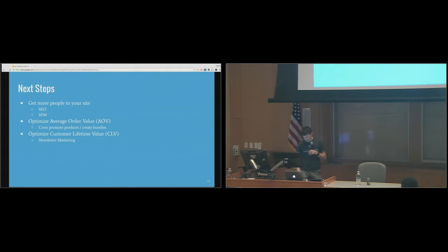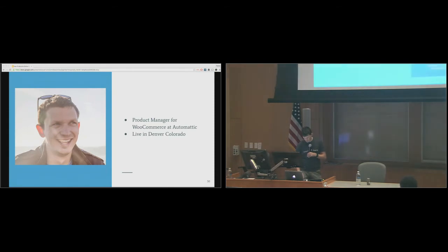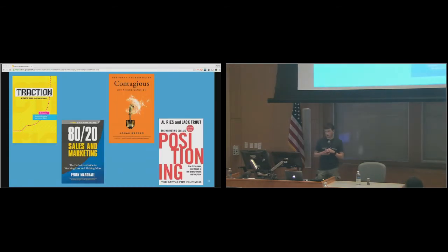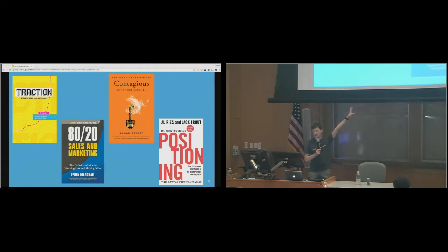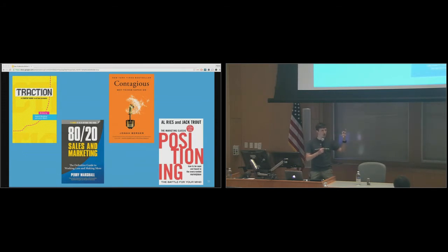I have a lot more resources. 'Traction' is a fantastic book — there are like 19 different traction channels, and it's really good even though it's for startups because almost all of them also work for e-commerce stores. 'Contagious' is about how products spread by word of mouth — how and why people share information. '80/20 Sales and Marketing' and 'Positioning' are about branding. All of these are fantastic business books for anyone who wants to do anything with e-commerce.